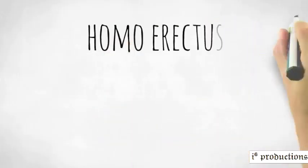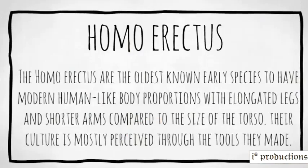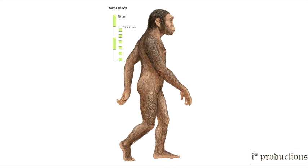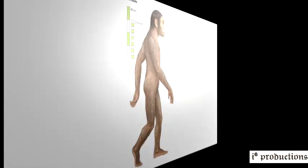The Homo erectus are the oldest known species to have modern human-like body proportions with elongated legs and shorter arms compared to the size of the torso. Because of their body structure, it indicates that they had adapted to only living on the ground. They also adapted to walk properly and possibly the ability to run long distances.